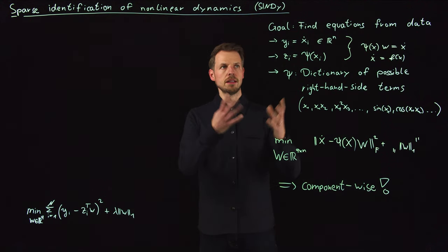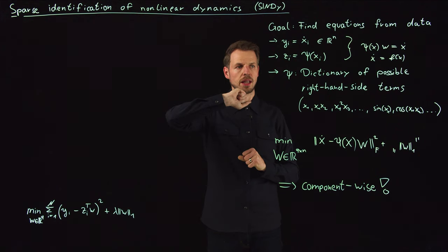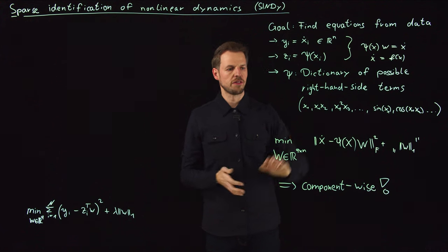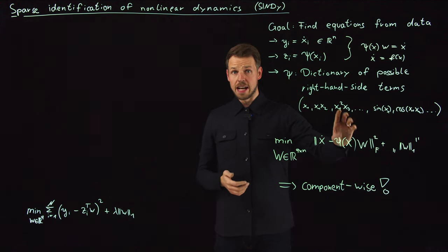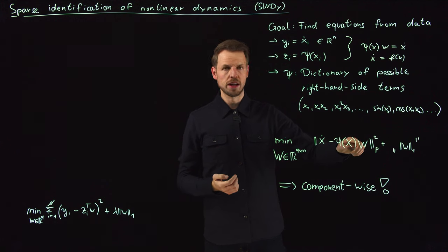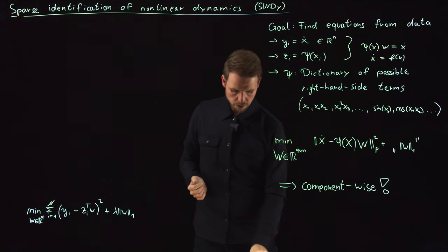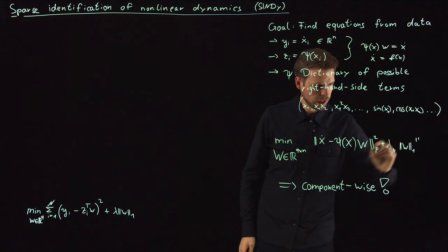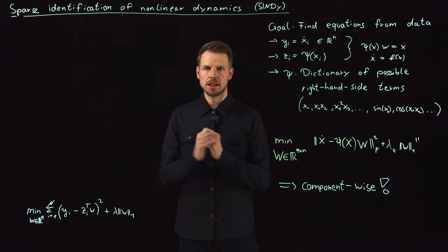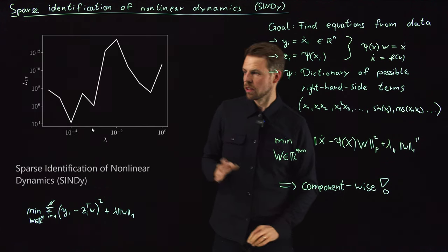Really, the SINDy algorithm is applying the lasso to a very specific setting, where we have x dot as our output, x as our input. We lift it in terms of a feature dictionary, and then find the weights with a sparsity term, component-wise. Otherwise this would not make too much sense, and then try to find the dynamics. So let's look at it.